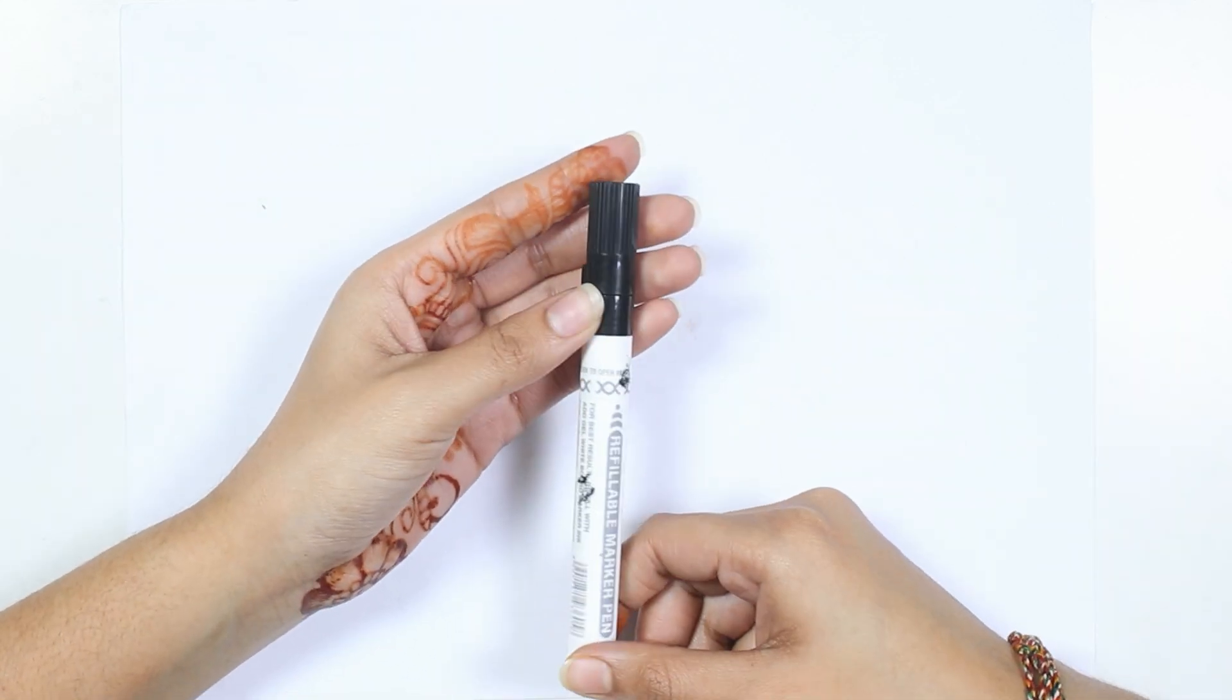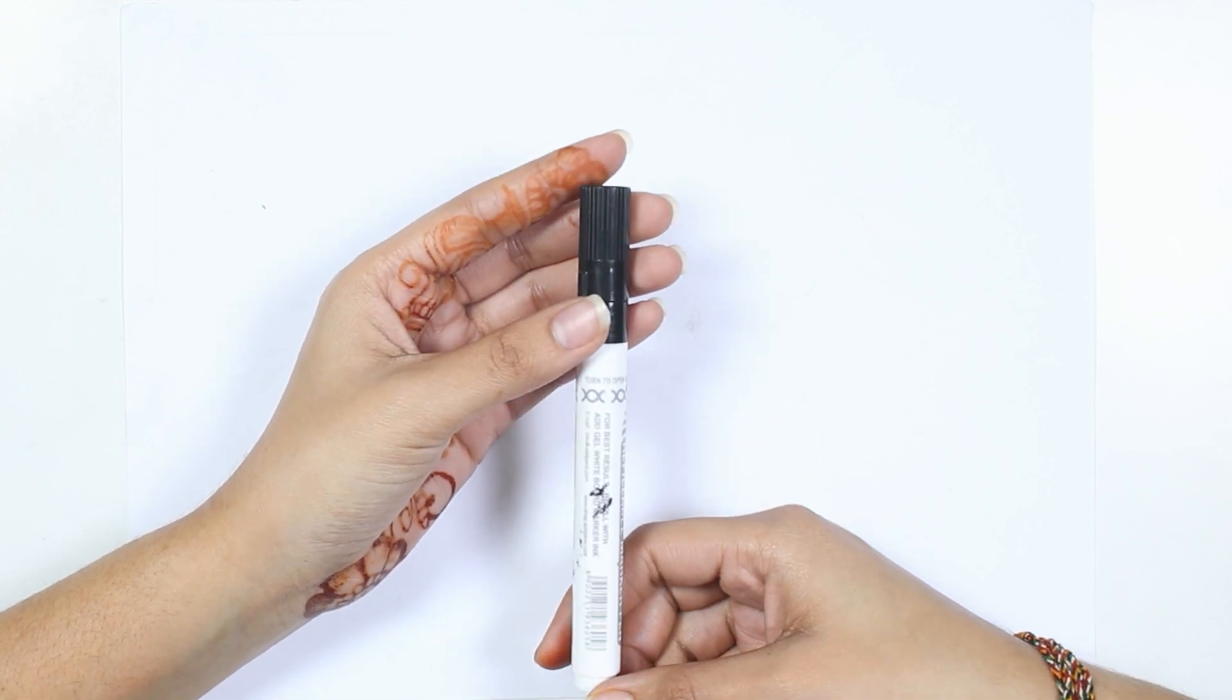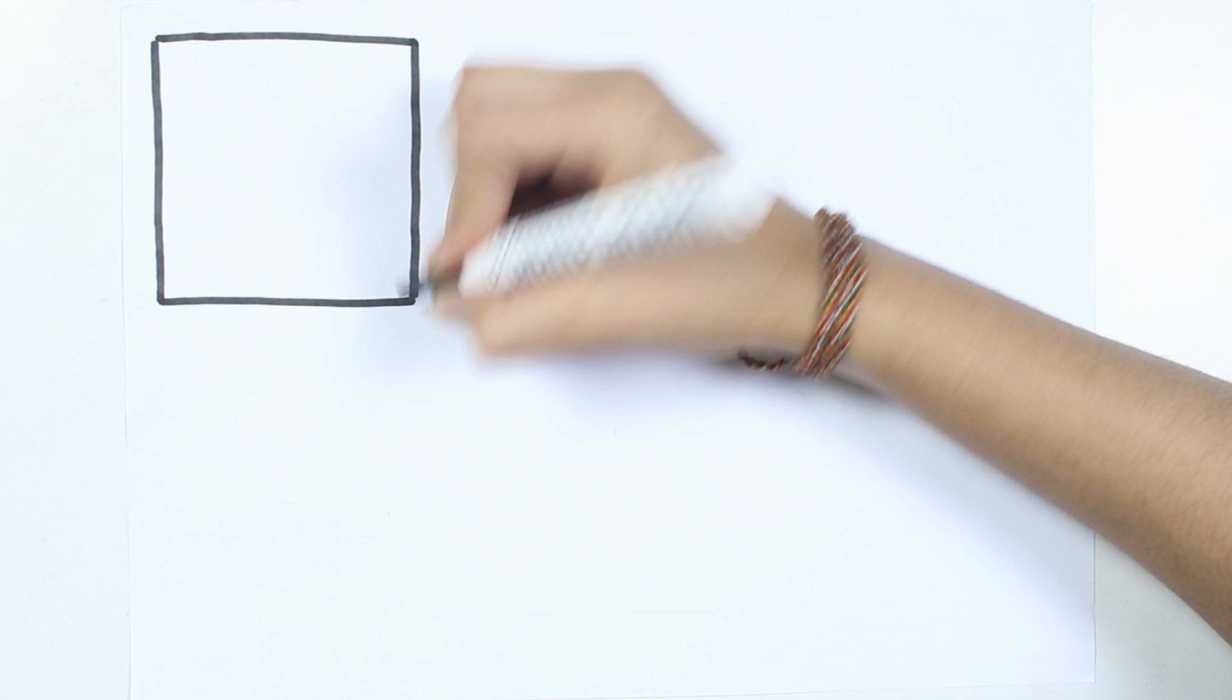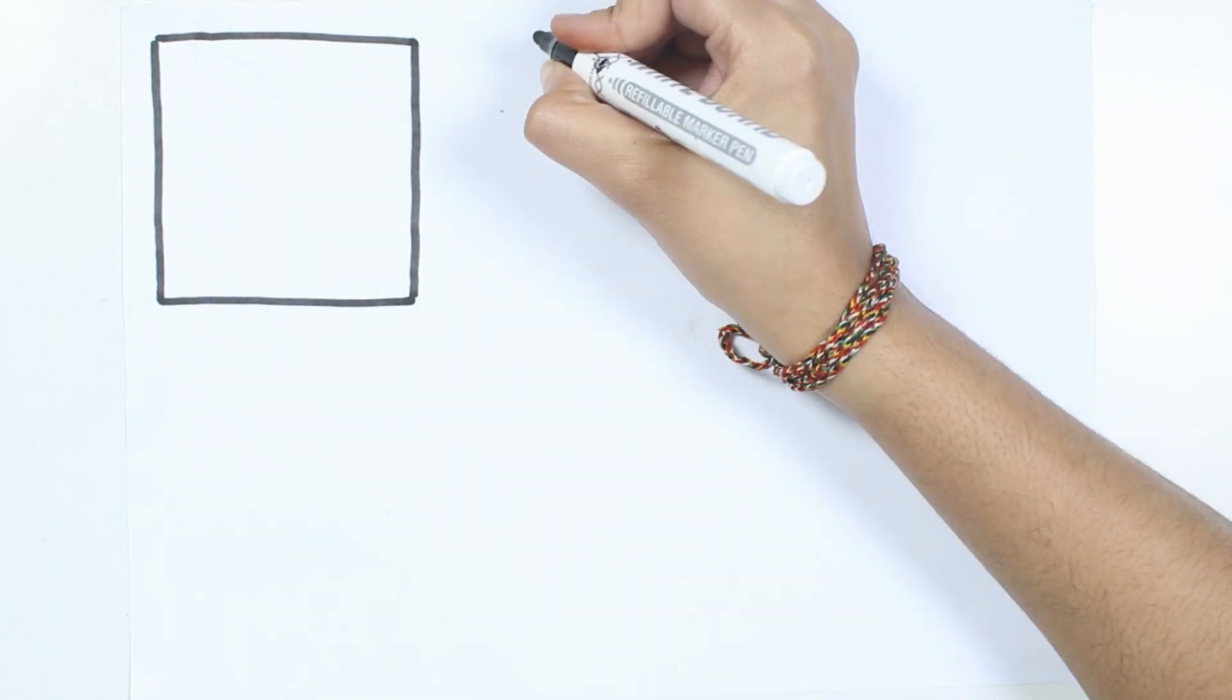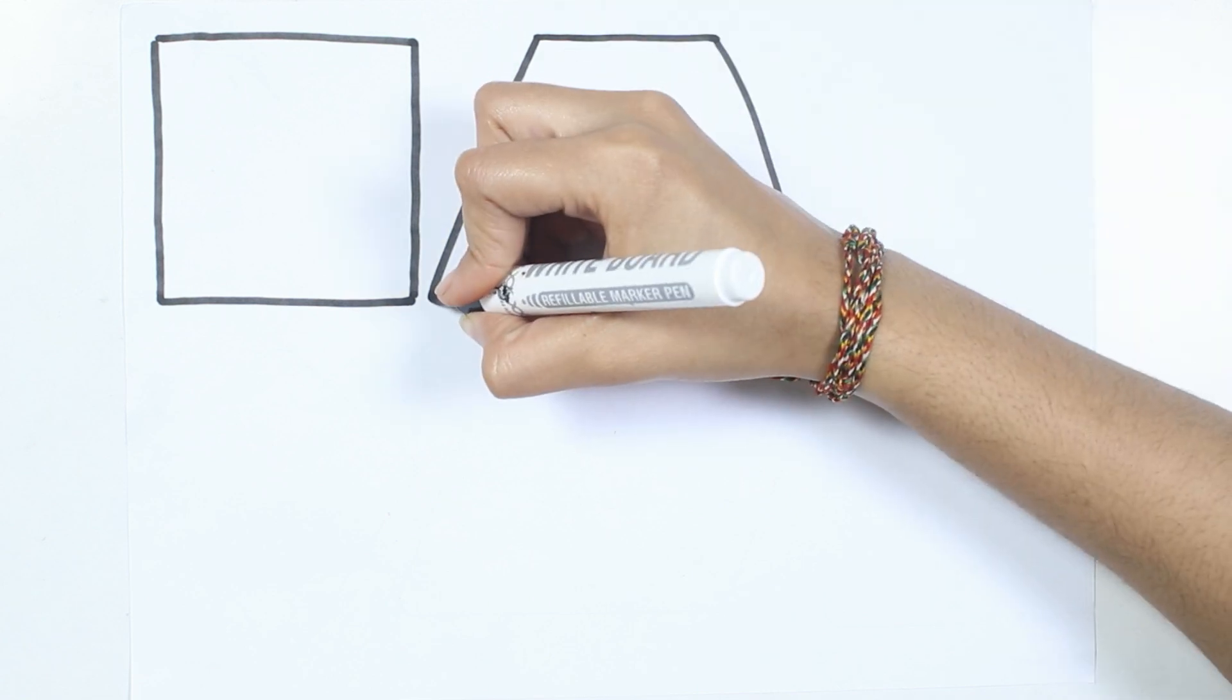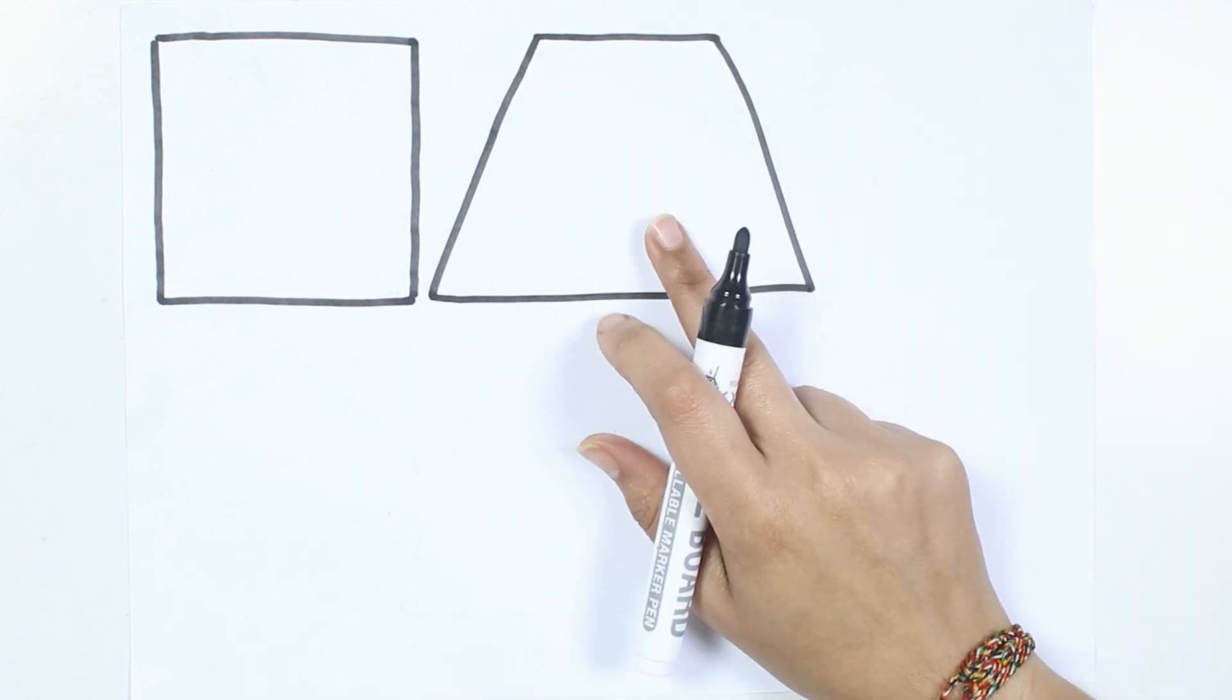This is the black marker. Which color kids? This is the black marker. Square. Trapezoid.